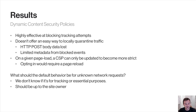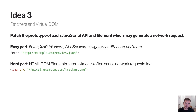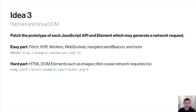That brought us to our third idea: detecting JavaScript network API events by patching and overriding all global interfaces used to create network requests. These APIs include XHR, Fetch, navigator.sendBeacon, and many more. These patchers evaluate the request being made and determine whether it should be blocked or allowed. We also need to detect pending DOM mutations that may cause a network request, so we patch the prototype methods and accessors of all global constructors and DOM tree construction utilities.